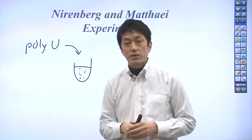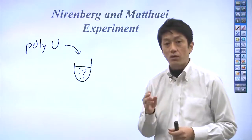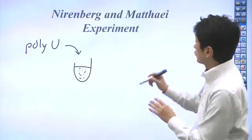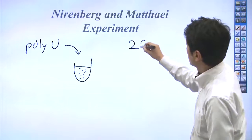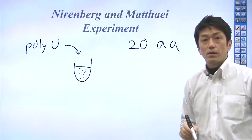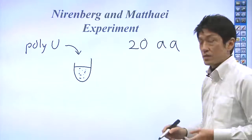Before these experiments, people knew that a triplet or 3 bases encodes an amino acid. There are 20 different kinds of amino acids. But we have only 4 bases in RNA.